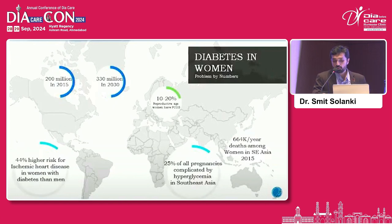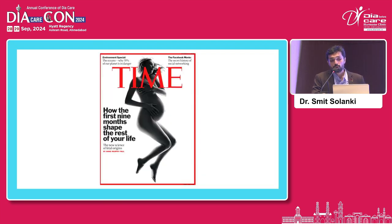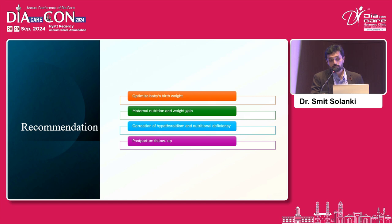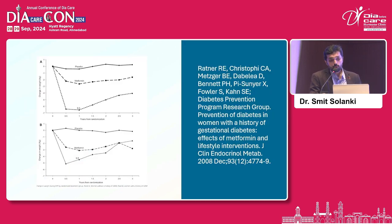25% of all pregnancies are complicated by hyperglycemia in Southeast Asia. For prevention strategies, this is called generational reprogramming — how the first 9 months shape the rest of your life. Recommendations include optimizing the baby's birth weight, managing maternal nutrition and weight gain, correcting nutritional deficiencies, and postpartum follow-up. The Finnish trial concluded that moderate individualized lifestyle intervention reduced the incidence of GDM by 39% in high-risk pregnant women, and was even more effective than metformin over a period of 3 years.